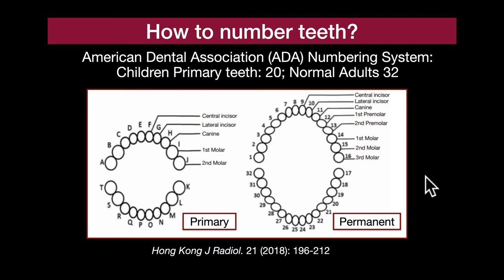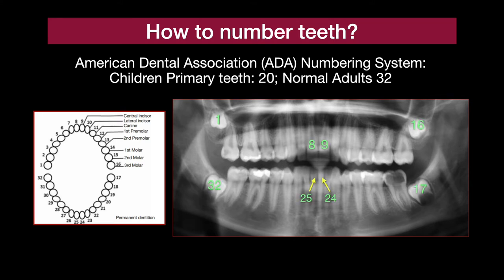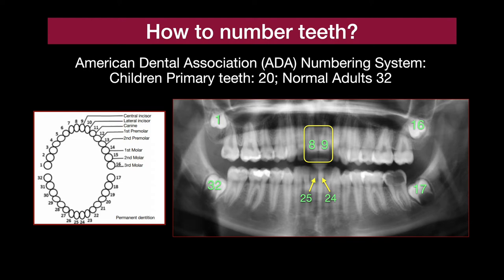If we translate this to a panorex examination itself, we're going to start with tooth number 1 in the upper right maxilla, end up with tooth 8 and 9 in the midline, 16, 17, all the way across to tooth number 32. What I tend to try to remember is that the central incisors are 8 and 9 up above, and below they're 24 and 25. So if I keep that frame of reference, I can pretty much keep things straight and count from wherever I am in whatever quadrant I'm in. Remember the 8-9 rule.